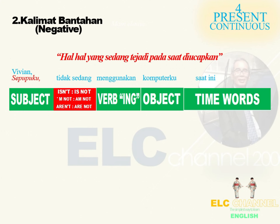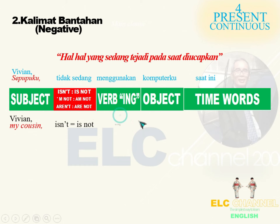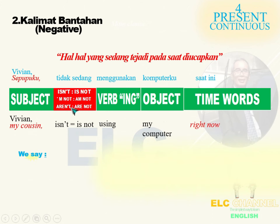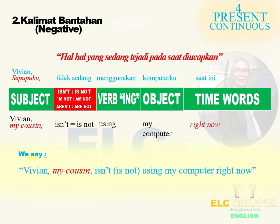Sekarang kita akan membuat kalimat bantahan terhadap pernyataan-pernyataan sebelumnya. Pertama: Vivian, my cousin, isn't or is not using my computer right now. San Jose isn't or is not working at a petrol station until he finds a suitable job.